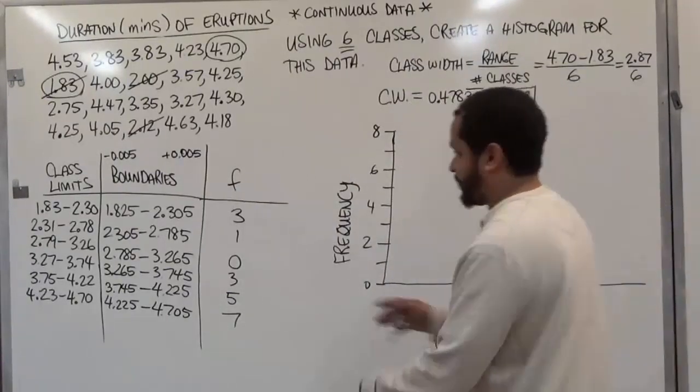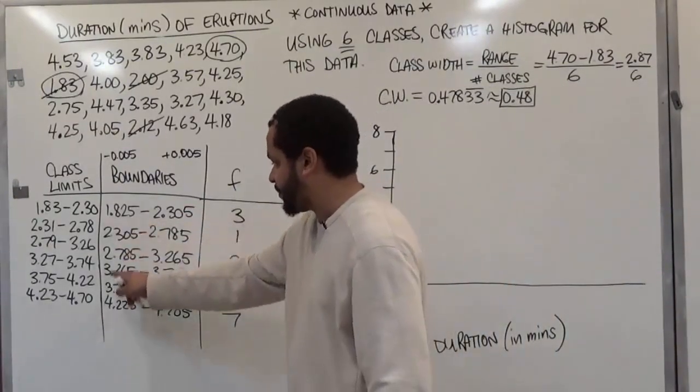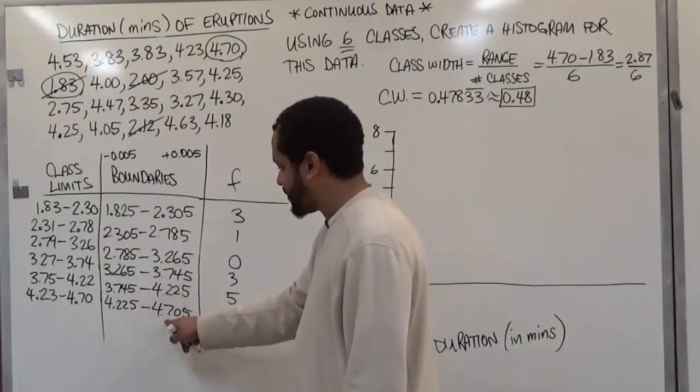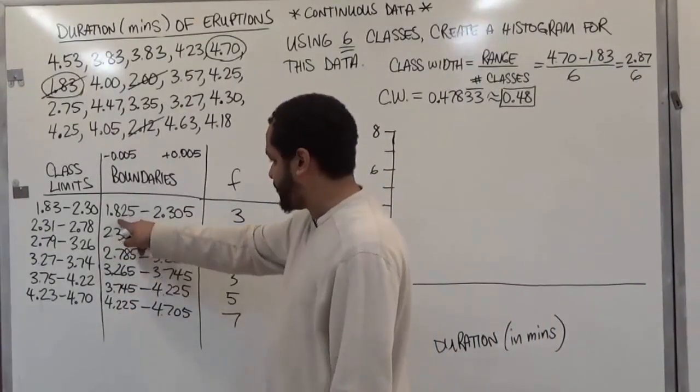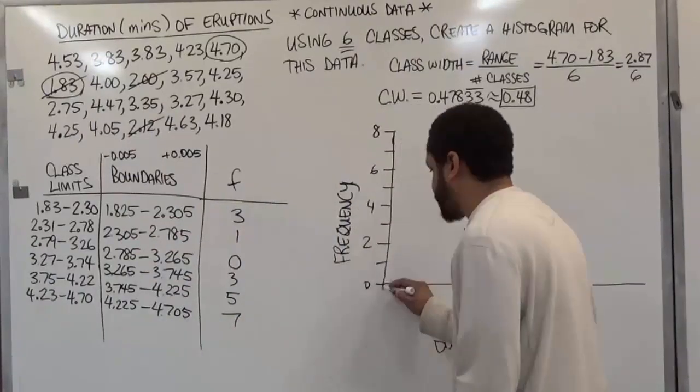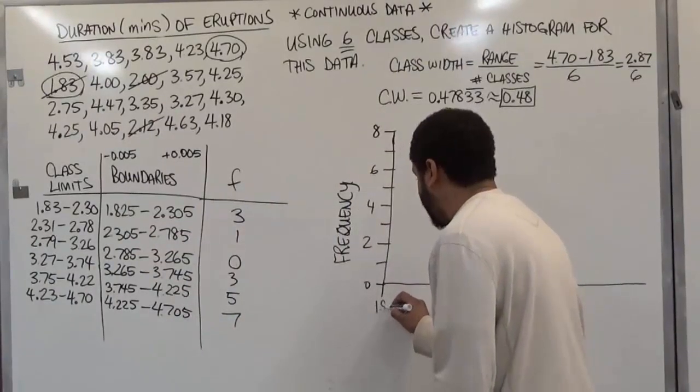Going left to right, we have to have all these boundaries in place. And what we do is we just take one whole column and the last number over or we take the first number and we take the next column next to it. So we'll start with 1.825.